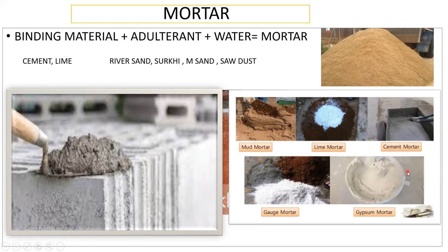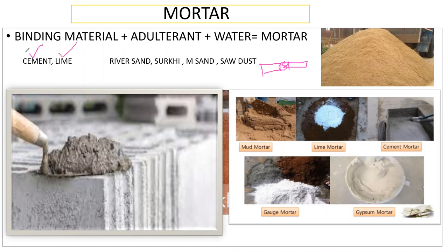The main question is: why do we need to use adulterant? Let's say I have two bricks and I want to join them. I prepare mortar for that. To join bricks I need a binding material — cement or lime. If I put cement with water between the two bricks, it will bind them. Similarly, adding an adulterant like river sand along with cement also acts as a binder with good binding action.